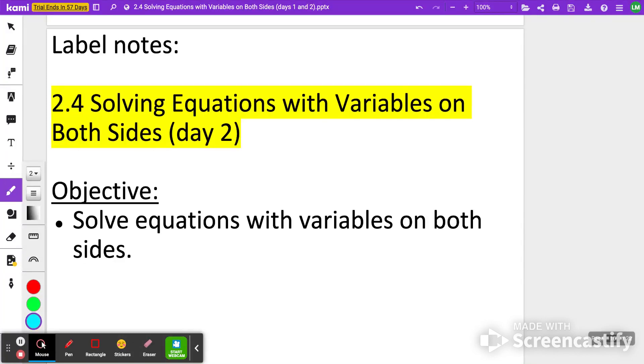What's up, Math8? Thanks for tuning in for another episode of Math with Mullins. Today we're going to continue looking at lesson 2.4, still solving equations with variables on both sides, but now we're going to have a little bit more of combining like terms, maybe some negatives in there too.